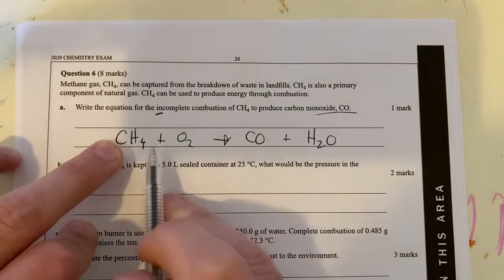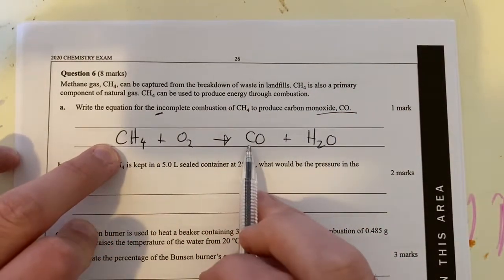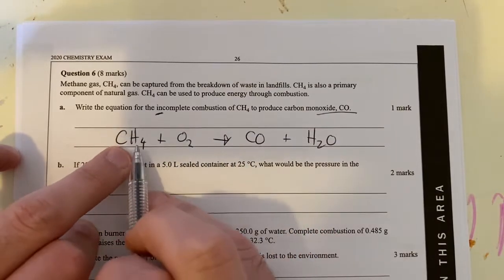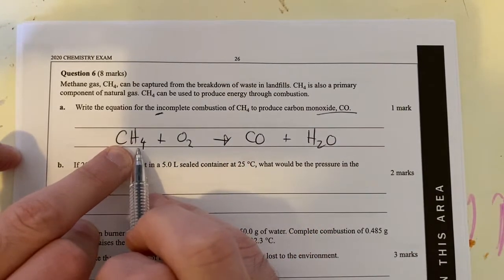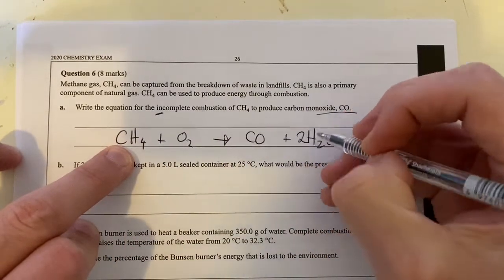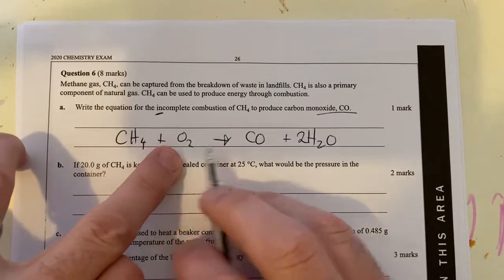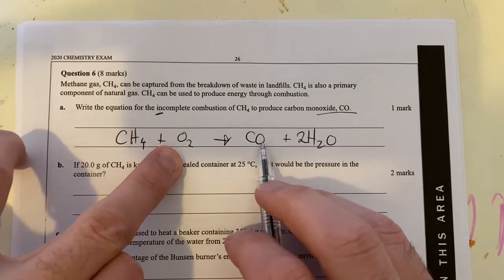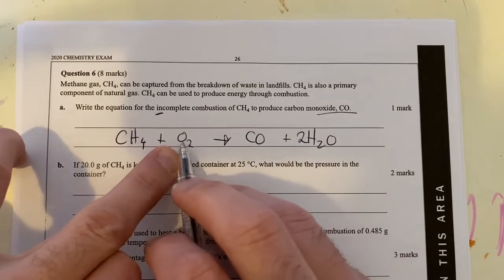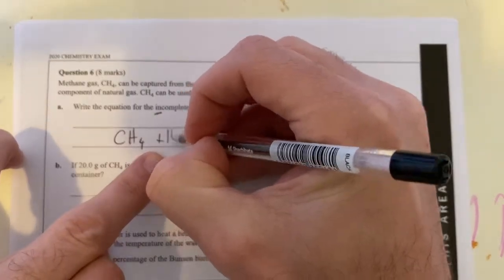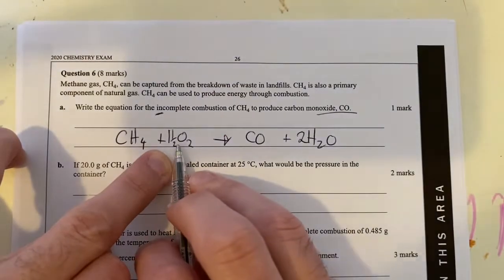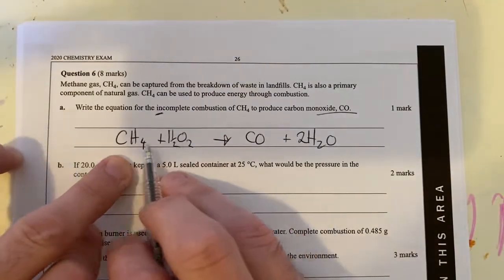Now in terms of balancing these, you balance the carbon first. So there's one carbon, that's already balanced. You balance the hydrogen next. I've got four hydrogens here, I need four hydrogens on this side, so two H2O. And now I'm ready to balance the oxygen. I've got two, three oxygens. How do I get three from two here? I'll take one and a half.